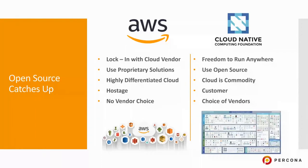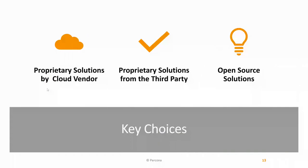There are actually three choices for technologies in the cloud: proprietary solutions by the cloud vendors, proprietary solutions from third parties such as a cloud marketplace, and open source solutions. Some customers bet on a single vendor because they believe it allows them to get to market faster. Others value independence and prefer open source. This is the framework I am going to use when talking about the different solutions we will see.